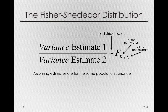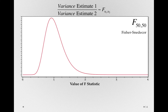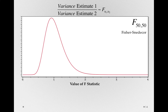Let me show you what the Fischer-Snedeker looks like when we have the same number of individuals in our variance estimate 1 and our variance estimate 2. Here is a Fischer-Snedeker distribution with 50 numerator degrees of freedom and 50 denominator degrees of freedom. This is the distribution of a statistic when we take the ratio of variance estimates where the numerator has 51 people and the denominator also has 51 people. If you were to do this sampling experiment, we take a sample of 51 people, calculate a variance using our sample variance estimator, then take another 51 people from the same population, calculate a variance estimate, and take the ratio. If we were to do that exact procedure millions and millions of times, the shape of those ratios would look just like this. And that's the Fischer-Snedeker.